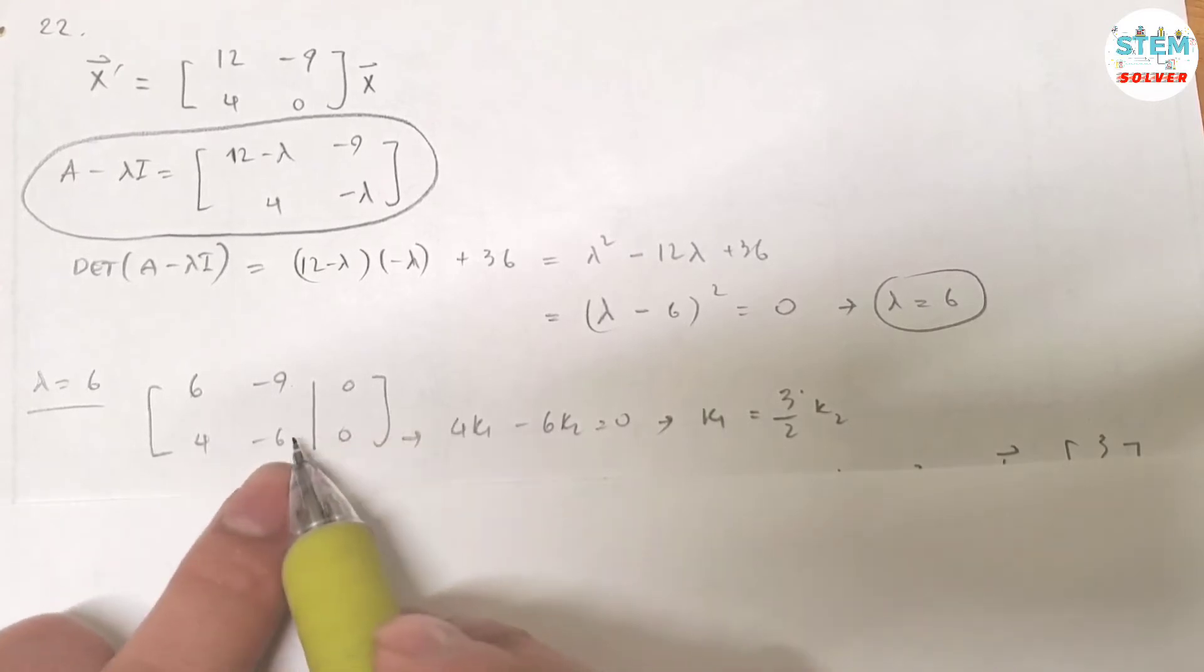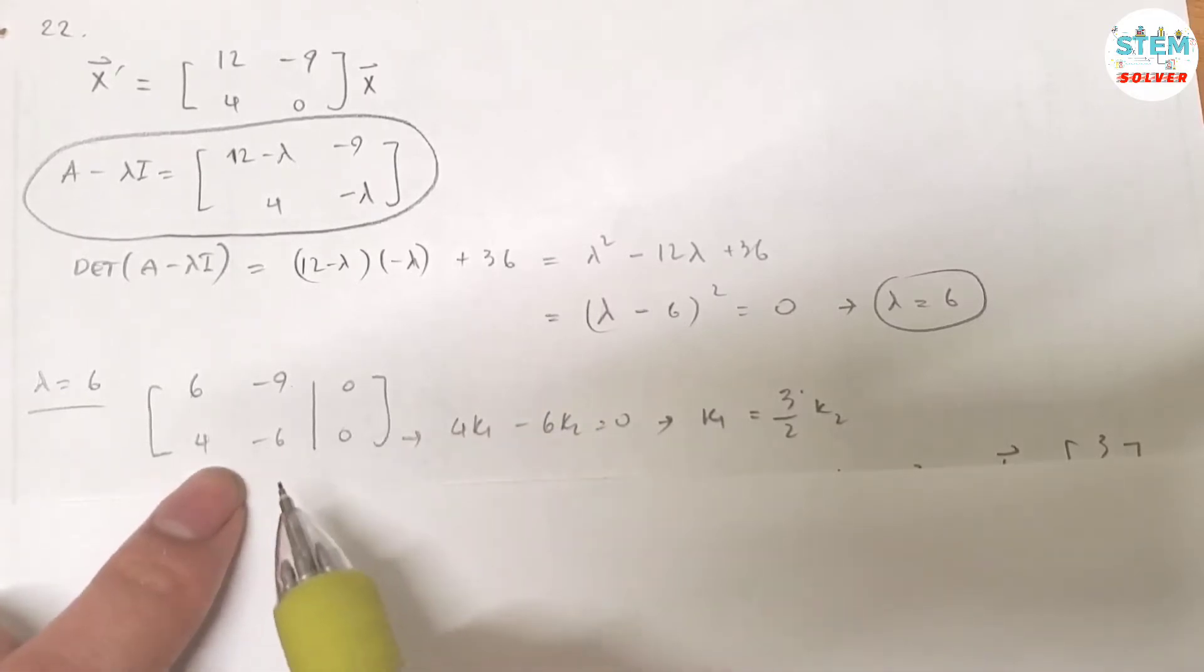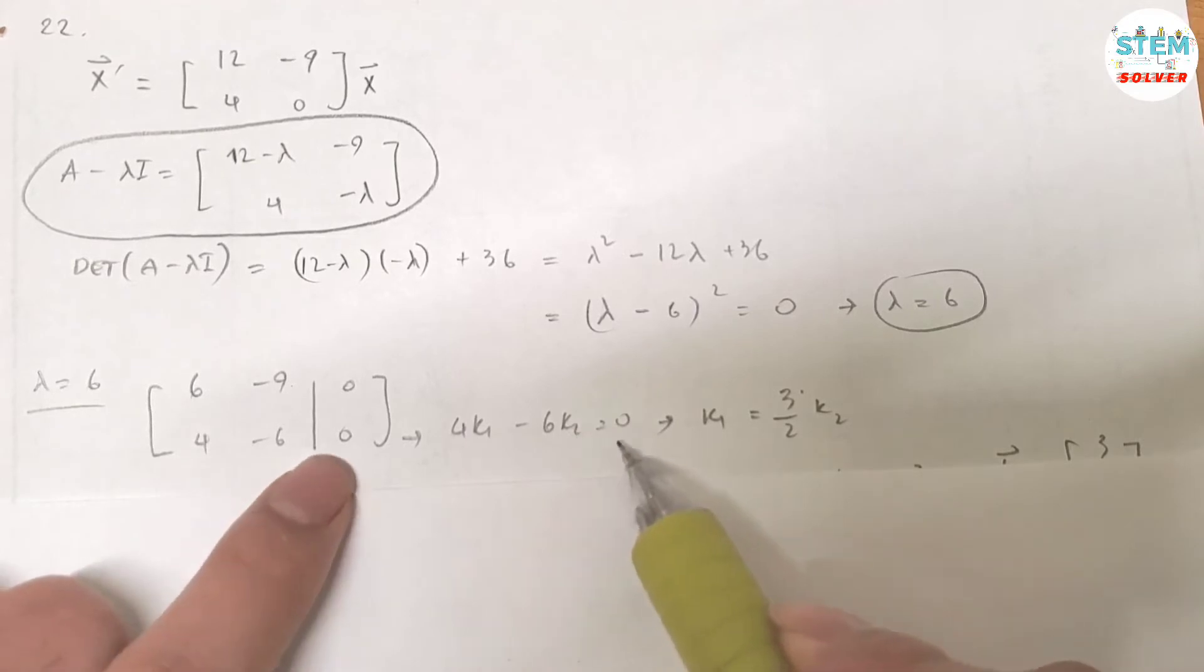So I know that if I reduce this down to the base matrix, I will get an infinite solution. So instead of going down to the base matrix, I'm going to use either one of these equations to solve for the unknowns. So use the second equation, I have 4k1 minus 6k2 equals 0.